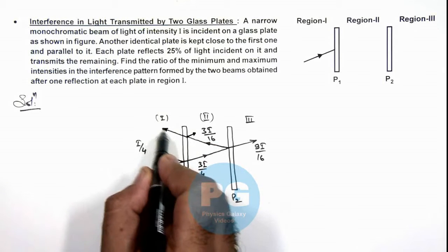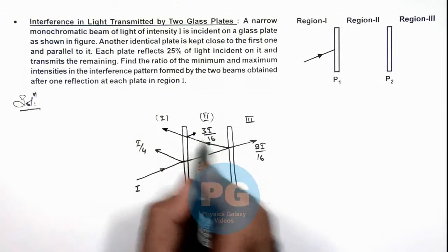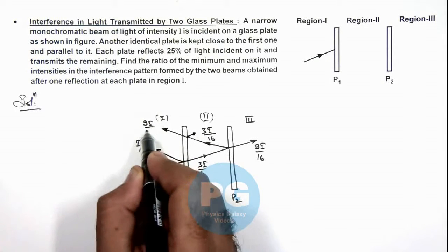And we are interested only in the light which is reaching to region 1, which is 3/4 of this intensity, which is 9I/64.